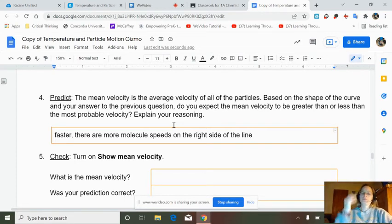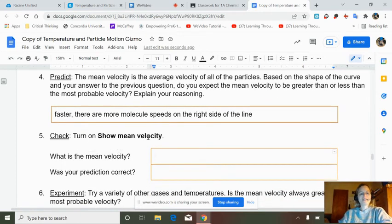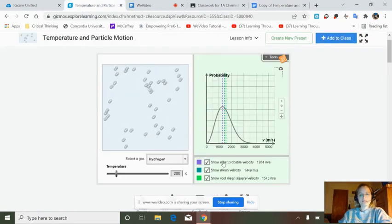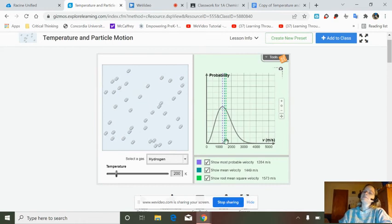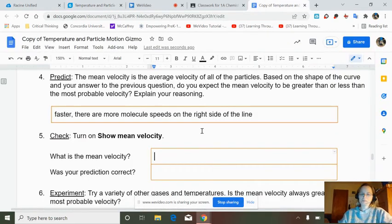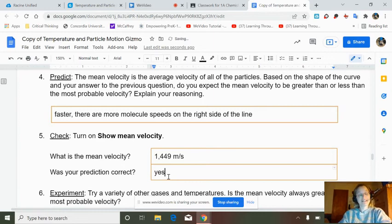So predict or look at the mean velocity, which I actually had clicked. Look at that, 1,449. We were right. Yay, meters per second, because numbers without units are useless. Is your prediction correct? Of course it was. Because you guys are just that smart.